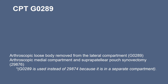Another example is when a loose body is removed from the lateral compartment and an extensive synovectomy is done in two compartments — in this case the medial and patellofemoral compartment. G0289 is used for the loose body removal instead of CPT 29874, because it is in a separate compartment. 29874 would be global and would not pay with the extensive synovectomy.